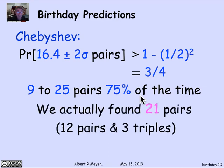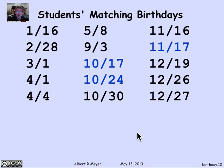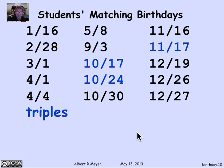Did that actually happen? It did. In our class of 110, we actually found 21 pairs of matching birthdays — literally 12 pairs and three triples, but each triple counts as three matching pairs. The blues shown are triples. You can see whether your birthday is among those, knowing you have a classmate or two with the same birthday. There are 15 different birthdays, but they count as 21 pairs: 12 single pairs and three triplets, each counting for three pairs.